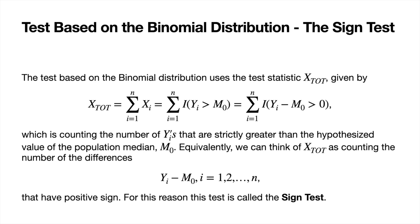When we think about how we calculate the value of the test statistic for the sign test, which we're calling X-tote, the first thing we do is take the difference between each observation and the proposed value of the population median. We can think about ignoring the magnitude of those differences and just focusing on the signs of those differences. That is why this test is called the sign test.